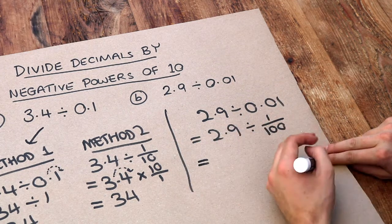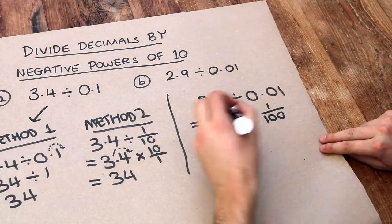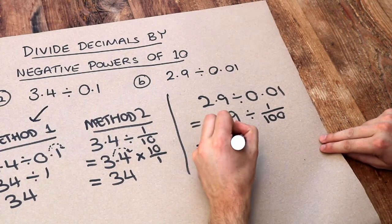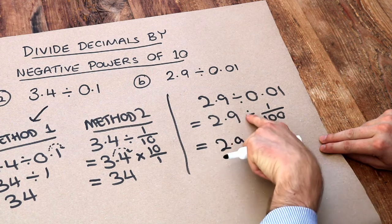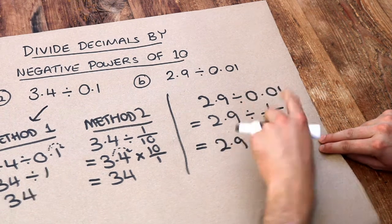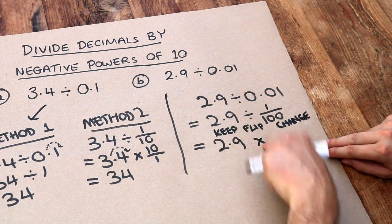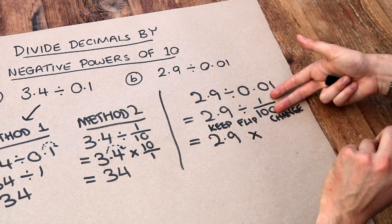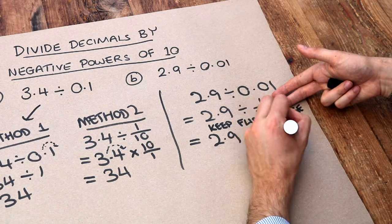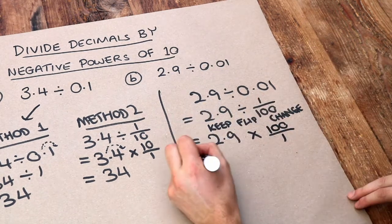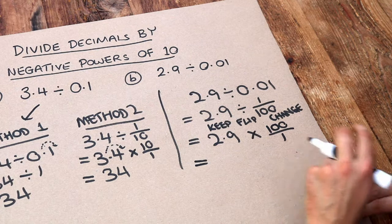Now let's use the keep change flip method for dividing fractions. We've got 2.9, we keep this. We change this into a times, and we flip this. Keep flip change. So divide change it into a times. Now if we flip that upside down, we get 100 over 1, and 100 over 1 is just 100. So 2.9 multiplied by 100.